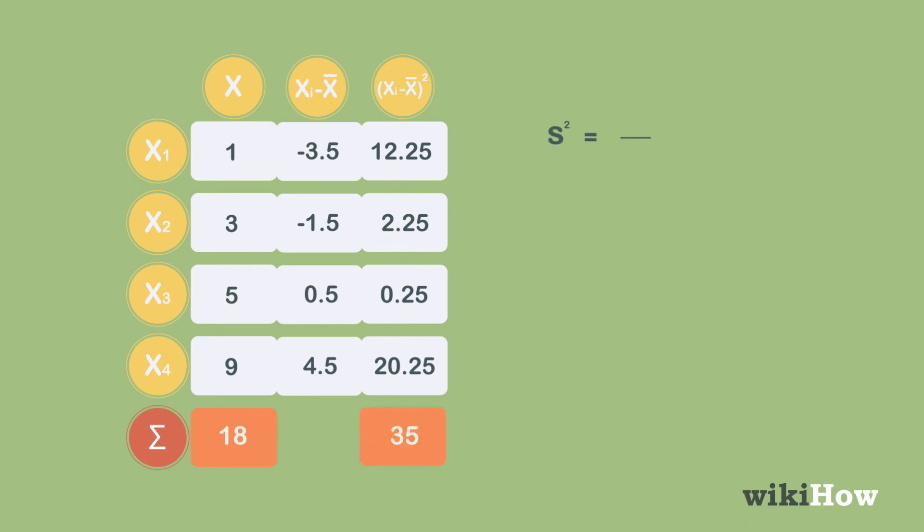Finally, divide the sum by n minus 1, where n equals the number of data points. In this example, there are 4 data points. So you would divide the sum, 35, by 4 minus 1,